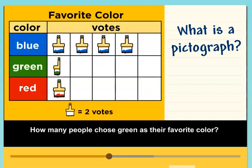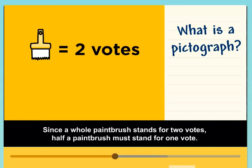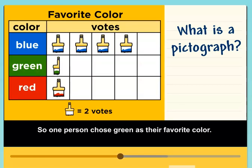How many people chose green as their favorite color? Since a whole paintbrush stands for two votes, half a paintbrush must stand for one vote. So one person chose green as their favorite color.